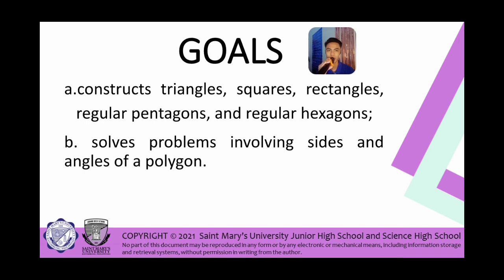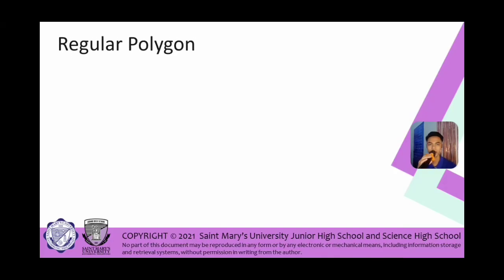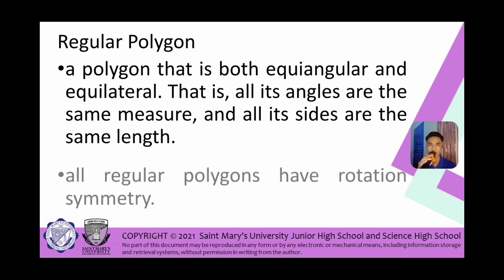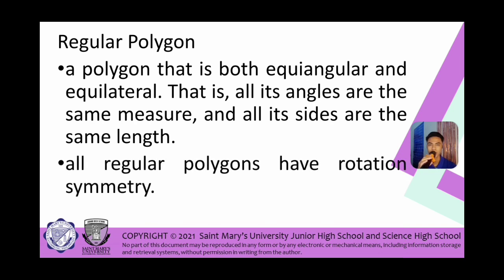Let's have a recap regarding our lesson. What is a regular polygon? A regular polygon is both equilangular — having equal angles — and equilateral — having sides of the same measurement. All its angles are the same measure and all its sides are the same length. Also, all regular polygons have rotational symmetry, meaning a rotation of less than 360 degrees will carry the regular polygon onto itself. A regular N-sided polygon has rotational symmetry for any multiple of 360 degrees divided by N.